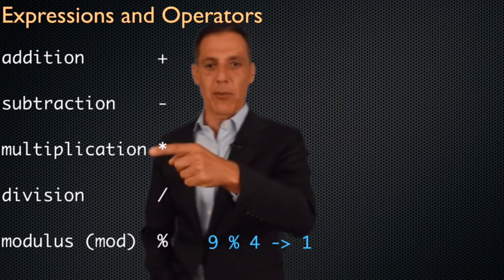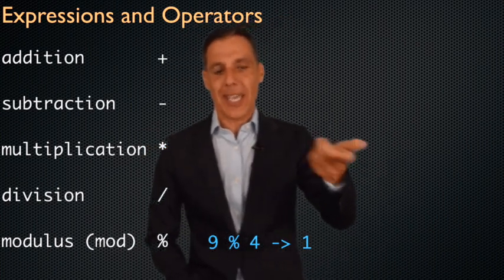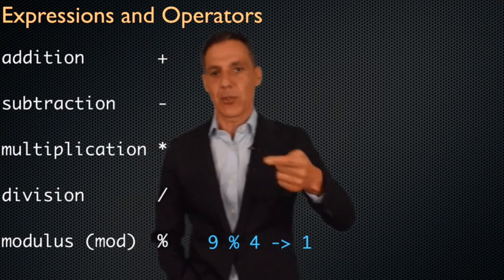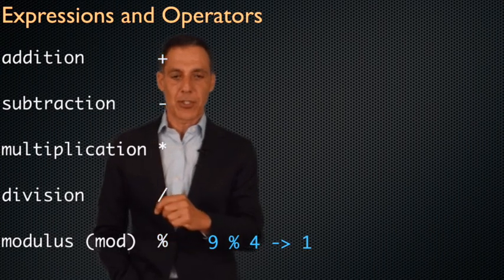Notice, by the way, multiplication is the asterisk, not x, because x is a character that we can use as a variable. So it's the star operator. And then there is the modulo operator, which is the percent.